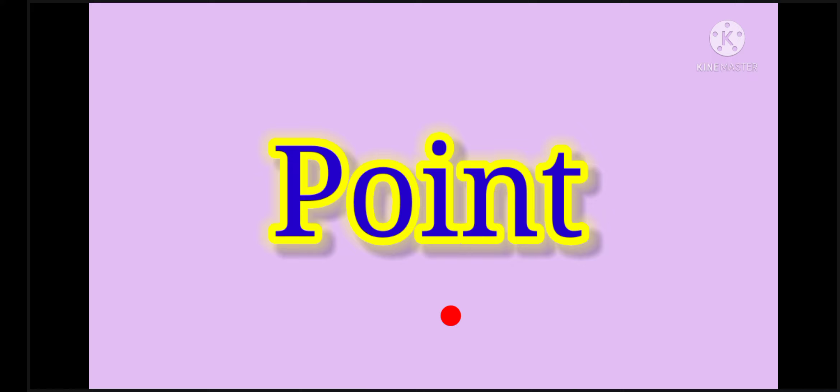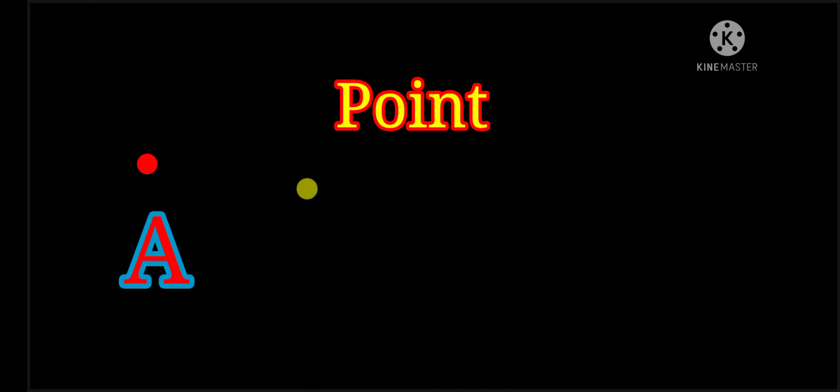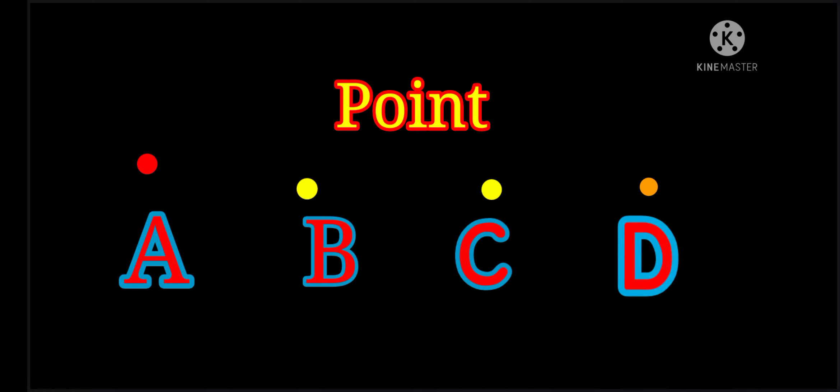Point. A point is denoted by capital letters of English alphabet like A, B, C and D. In this picture, A, B, C and D are 4 points. They are read as point A, point B, point C and point D.